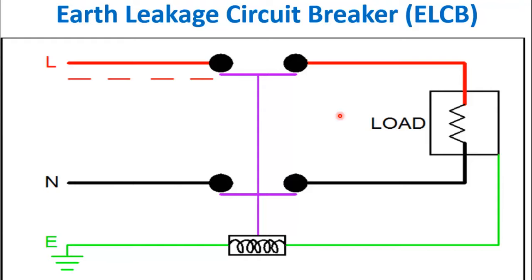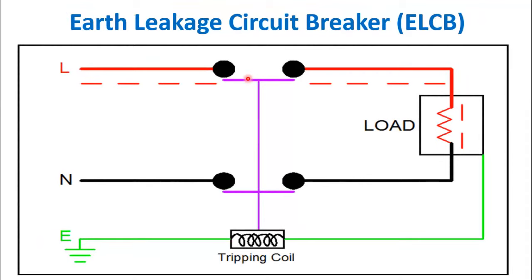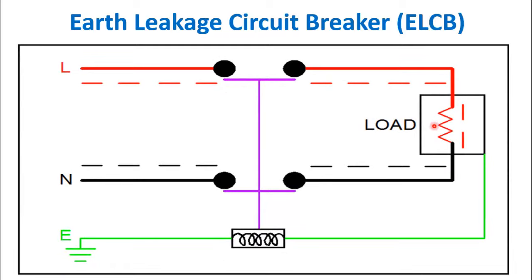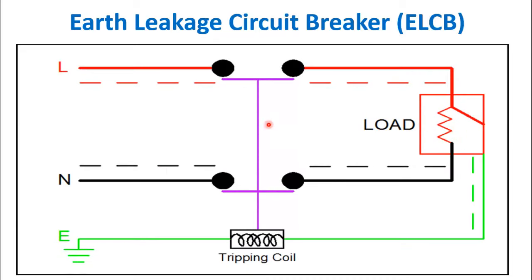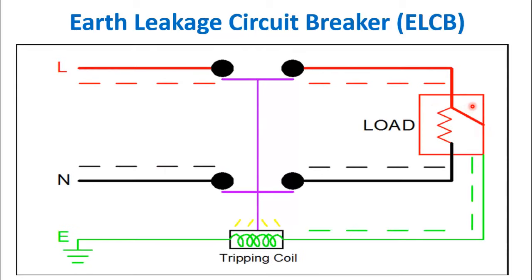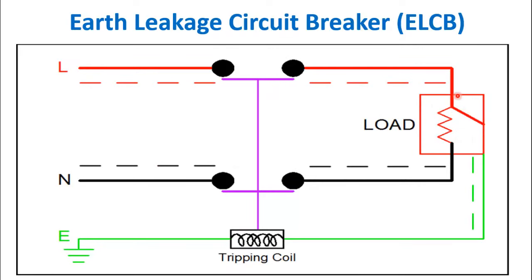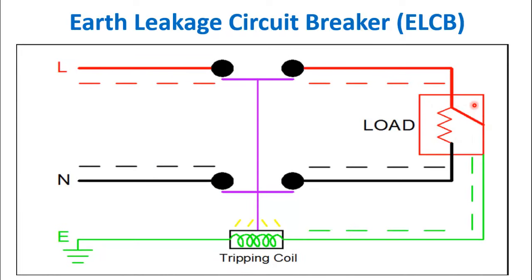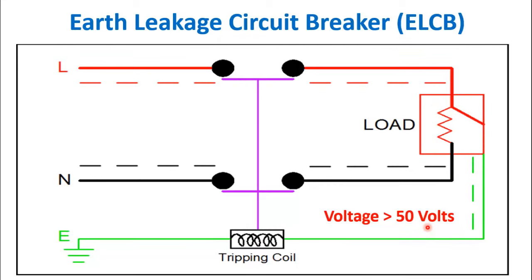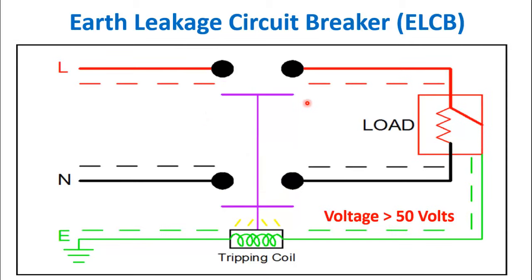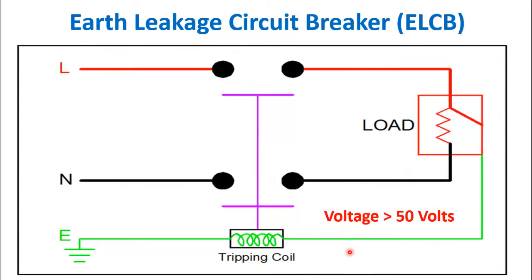First I will explain the working principle with the help of animation. Here you can see that during normal operation the current flows from the phase into the load and returns into the neutral. So whenever there is a fault, the phase gets connected with the body of the equipment and now the current starts to flow through the body of the equipment. As the voltage on the equipment exceeds 50 volts, the tripping coil will sense the voltage and it trips the breaker, stopping the flow of current.